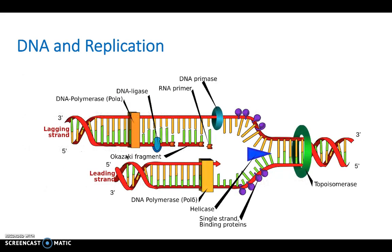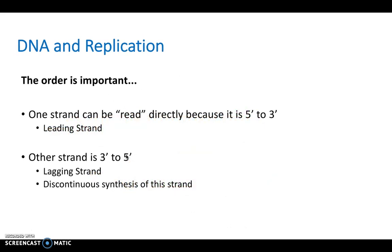So here is a picture of DNA and replication. It's really important to be able to label everything on this diagram and understand what it is. So remember the order is important. We've already said one strand can be read directly because it is a 5 to 3 and this is the leading strand. And then we have another strand which is read in the 3 to 5 direction and this is the lagging strand.